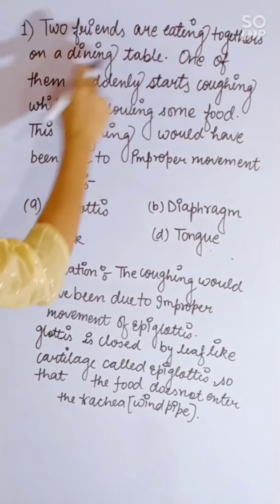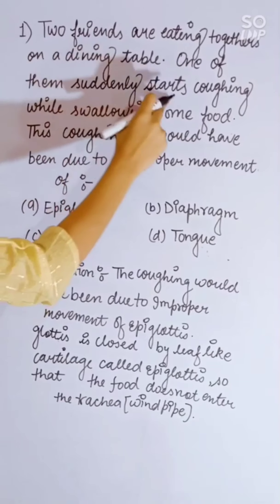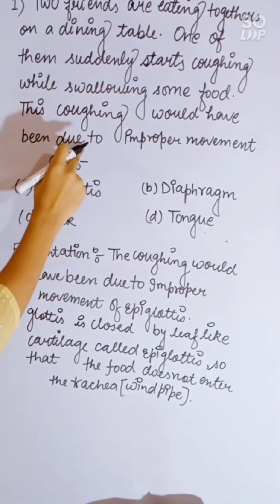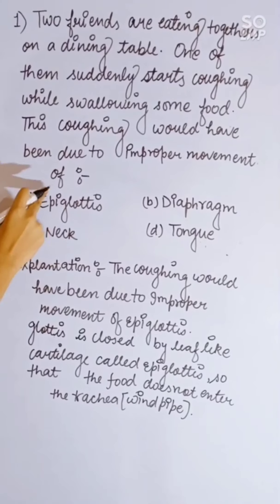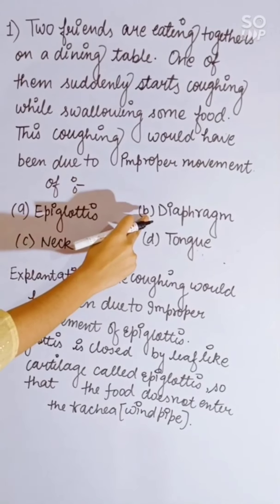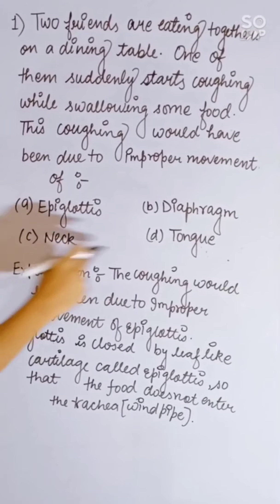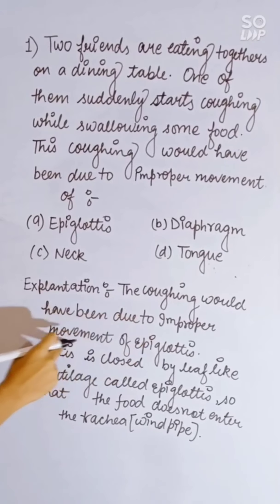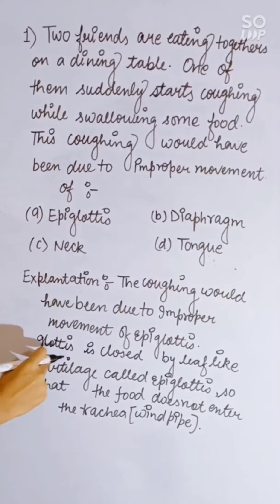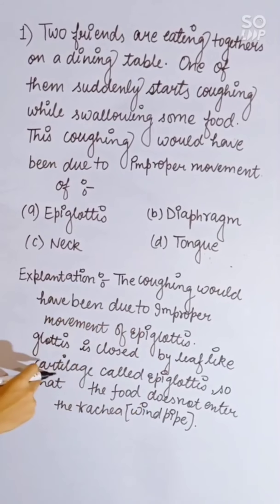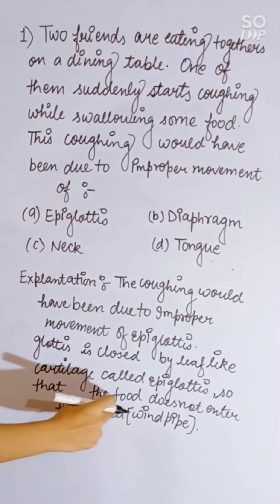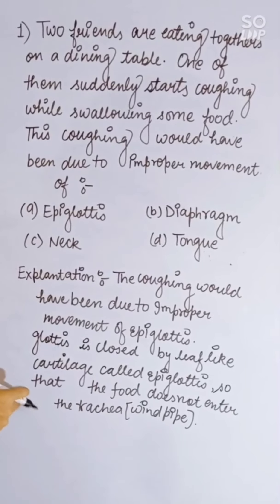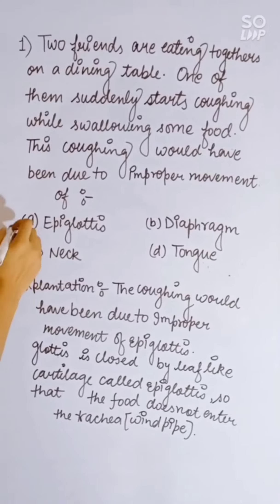Two friends are eating together. One suddenly starts coughing while swallowing food. This could have been due to improper movement of: epiglottis, diaphragm, neck, or tongue. The glottis is closed by the leaf-like cartilage called the epiglottis so that food does not enter the trachea. Correct answer is epiglottis.